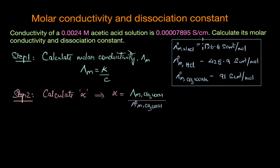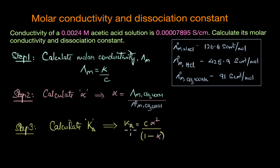For that, we need to use the additional information that is given. We will see how to do that when we solve this part. And lastly, to calculate the dissociation constant, we use the formula: Ka = Cα² / (1 − α). In this step, you simply substitute the value of alpha from step 2 into this equation to get the dissociation constant.